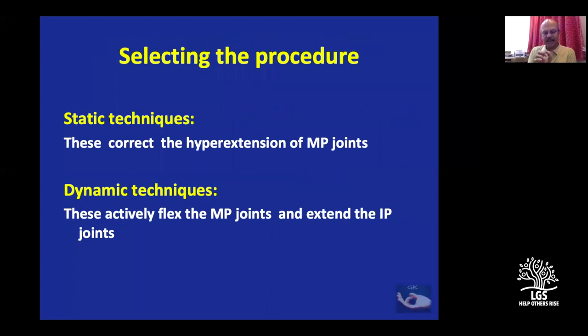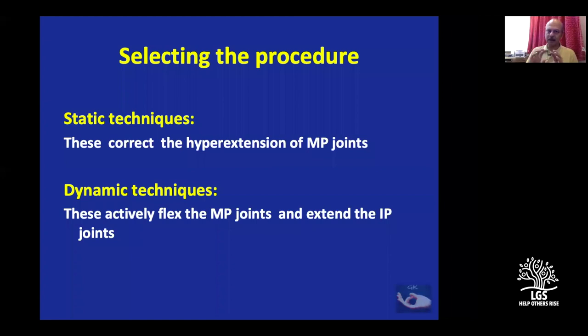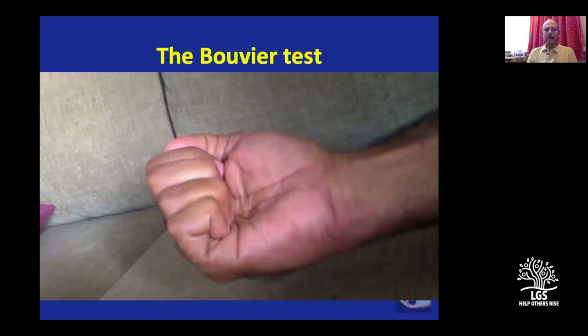Static techniques only correct the hyperextension — the MCP joints are stabilized or kept in minimal flexion so that the long extensor can extend the IP joint. This procedure does not produce any movement. Dynamic techniques actively flex the MCP joint; static techniques keep the MCP joint in flexion by a procedure that does not move. Dynamic techniques can sometimes also extend the IP joints.